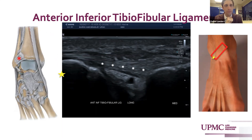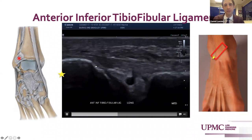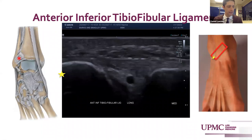Rotating the medial end of the probe upward so that the talus falls off but the tibia rises — in this image we have fibula to the left, talus to the right, and the laminar appearing hyperechoic structures bridging across those is your AITFL. That can also be stressed, the same as with your physical examination maneuvers. A dorsiflexion inversion moment at the ankle will stress those AITFL fibers, confirming that they're intact or perhaps lax and pathologic.